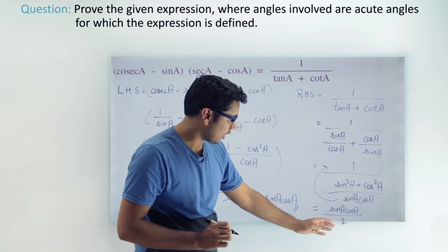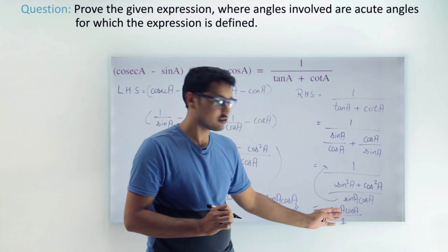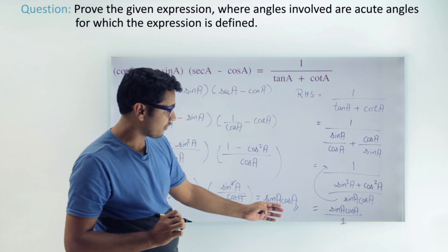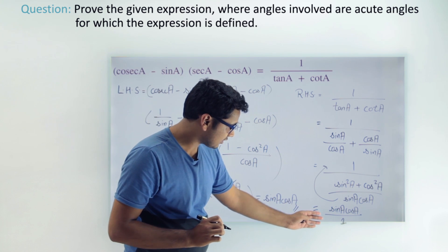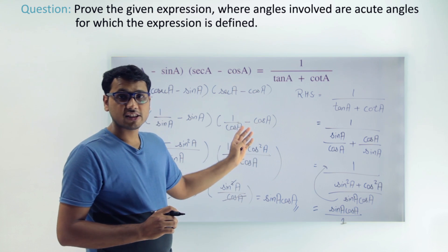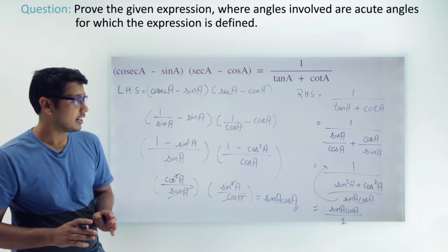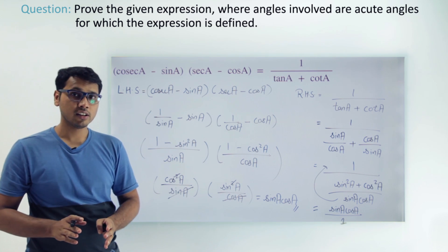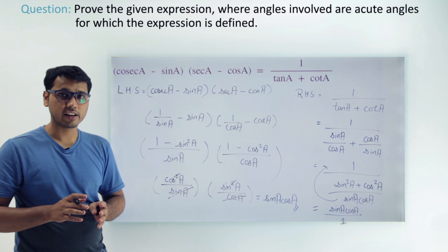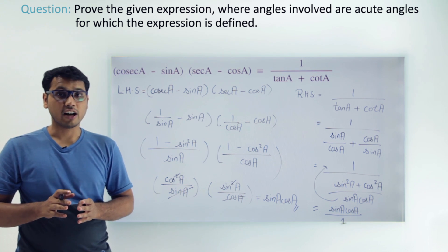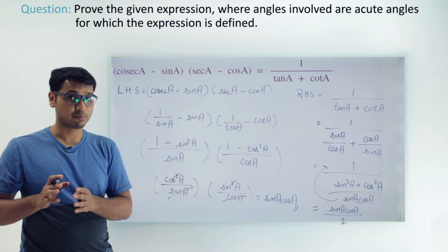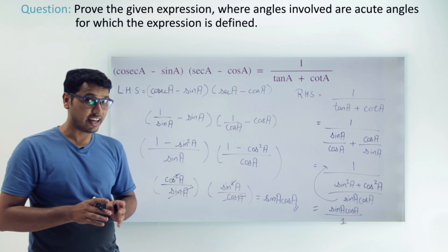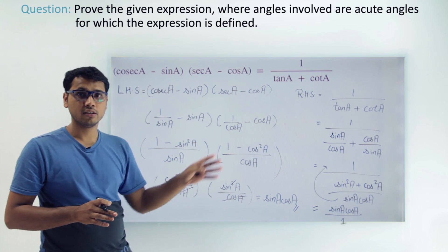This is the last step; we can't simplify further. Comparing the LHS and RHS, both equal sin a times cos a, so LHS equals RHS and the identity is proved. The key takeaway: whenever we get stuck with trigonometric ratios, break all functions into sin and cos, and we'll surely find a way to simplify.